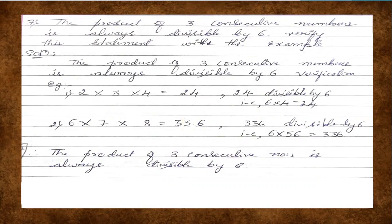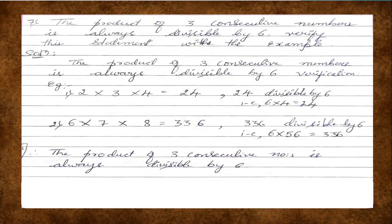So we took three consecutive numbers and multiplied them, and we got the product 24. Is 24 divisible by 6? Yes — 6 × 4 = 24. So therefore, the product of three consecutive numbers is always divisible by 6. For the first example, 2 × 3 × 4 = 24, and 24 is divisible by 6.